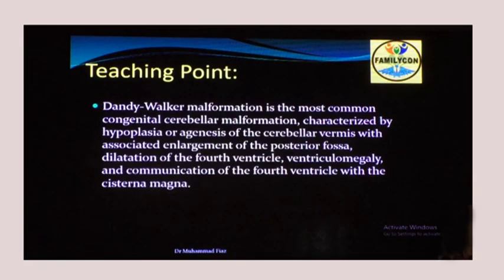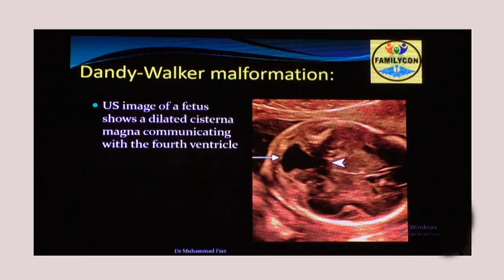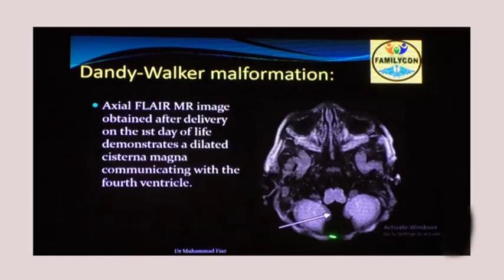Teaching point: Dandy Walker malformation is the most common congenital cerebellar malformation, characterized by hypoplasia or agenesis of the cerebellar vermis with associated enlargement of the posterior fossa, dilatation of the fourth ventricle, and communication of the fourth ventricle with the cisterna magna. The ultrasound image shows a dilated cisterna magna communicating with the fourth ventricle and hypoplasia of the vermis — a typical example of Dandy Walker malformation.